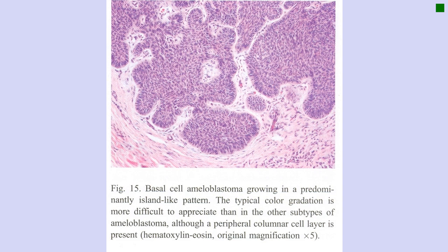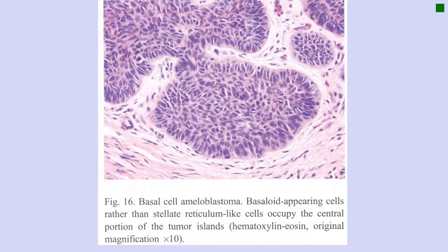In basal cell ameloblastoma, it is more of an island-like pattern and the typical color gradation is more difficult to appreciate than in the other subtypes. In the other subtypes you can clearly identify ameloblast-like cells and central stellate reticulum-like cells, but here, in place of the stellate reticulum-like cells, you see more basal-looking cells. Basaloid-appearing cells occupy the central portion of the tumor island.